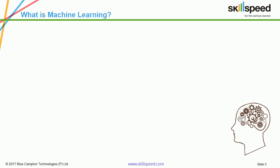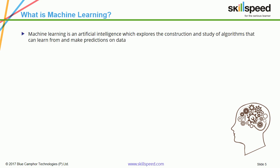What exactly is machine learning? Machine learning is an artificial intelligence which explores the construction and study of algorithms that can learn from and make predictions on the data.